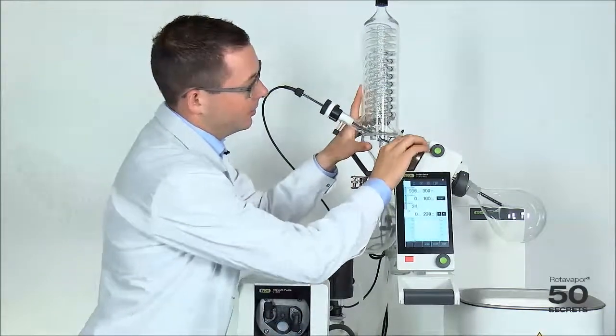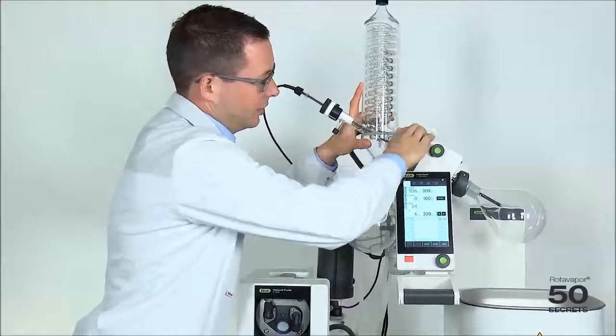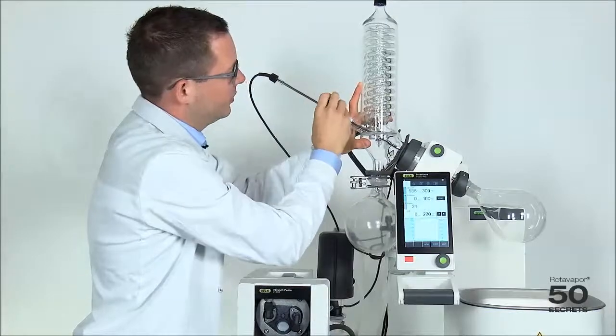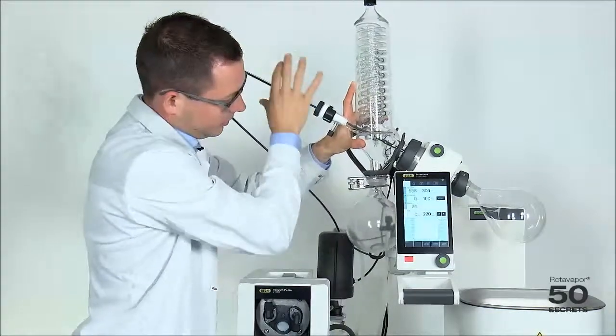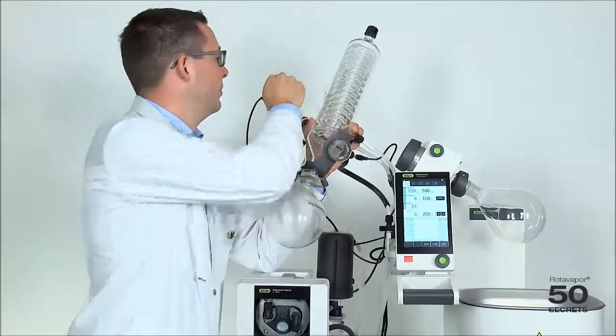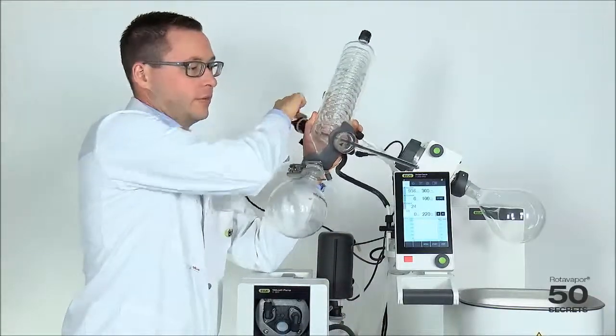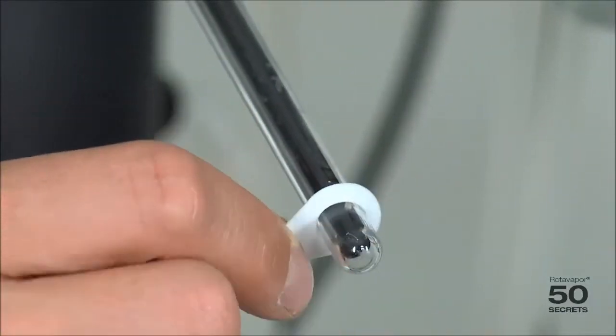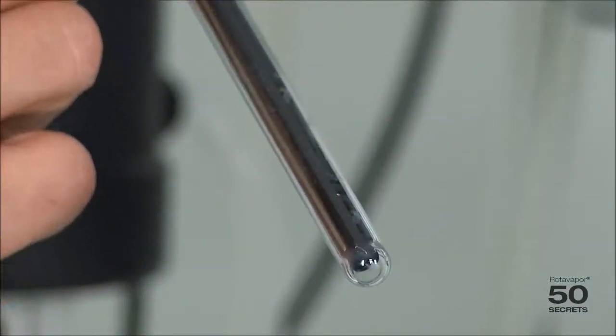First, we unscrew the condenser. We take out the foam sensor a little bit, we unscrew this, we take it a little bit out like this. Take the sealing off. We put the foam sensor back and we put the drain disc on top of the foam sensor like this.